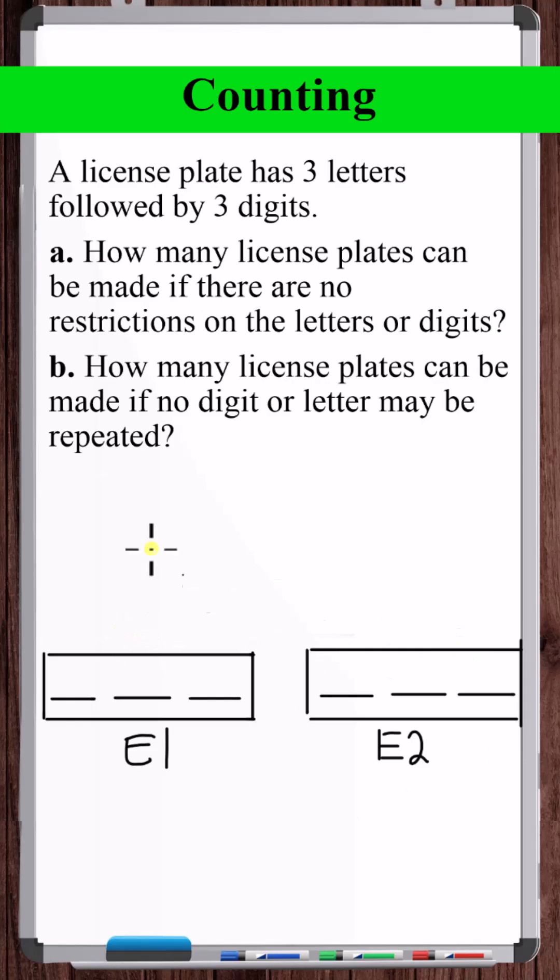For each of these events, for part A, order matters for both cases. We have a permutation with repetition problem because for part A we're allowed to repeat letters and digits.